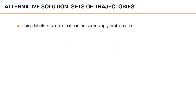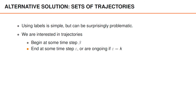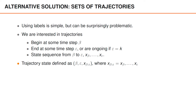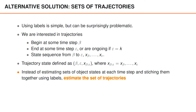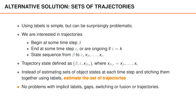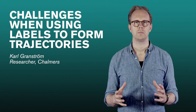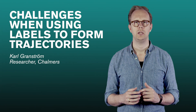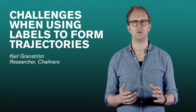So as we have seen, using labels is simple but can be surprisingly problematic. To find an alternative to labels, we can go back to what we are interested in — namely the trajectories. A trajectory begins at some time step beta and ends at some time step epsilon, or if epsilon equals the current time k the trajectory is ongoing. Given these two times, we have a state sequence from beta to epsilon. Therefore we can define a trajectory state as the tuple (beta, epsilon, x from beta to epsilon), and instead of estimating sets of object states at each time step and stitching them together using labels, we estimate the set of trajectories directly. With this approach we do not have any problems with implicit labels, gaps, switching, or fusion of trajectories. Later we will learn more about this alternative solution, which involves sets of trajectories.